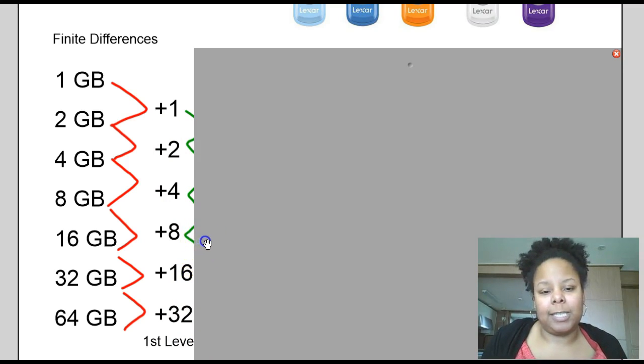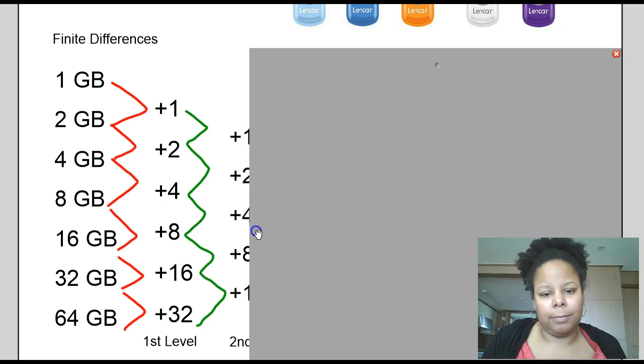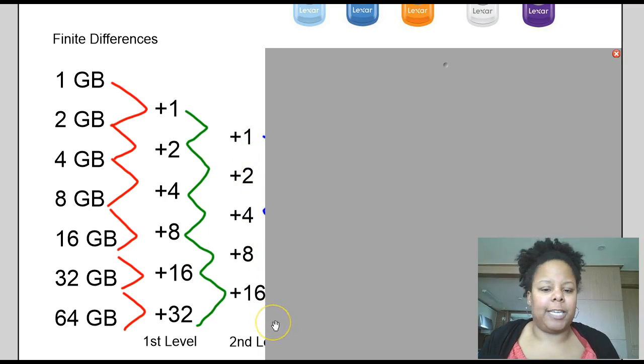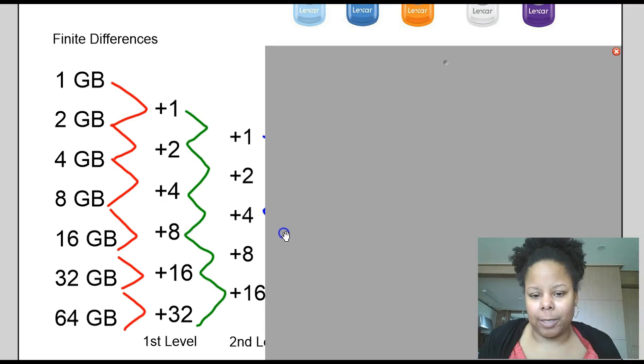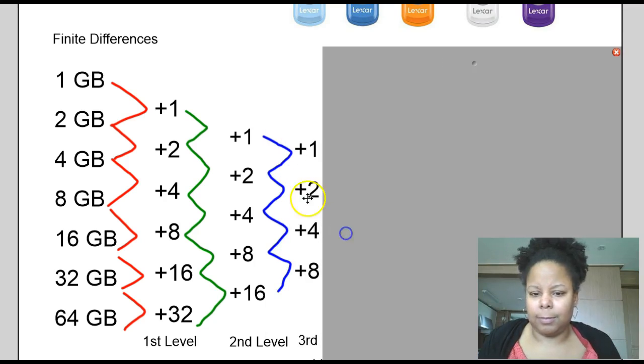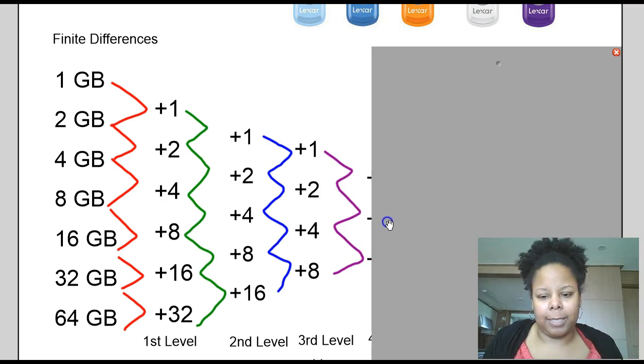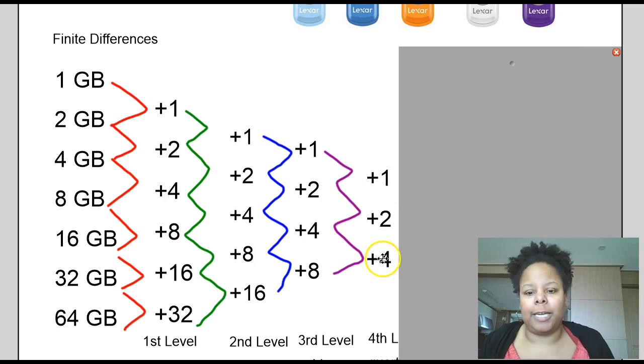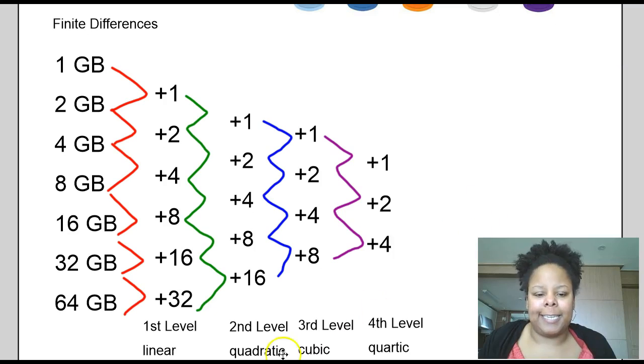So let's take a look at the rate of change at the second level. That rate of change is not constant. So that must mean it's not a quadratic equation. Let's take a look at the third level. The third level, the rate of change is not constant. So that implies that it's not a cubic relationship. Let's try one more level. It's not a constant rate of change at the fourth level. So all that means is that what we have here is something that is neither linear, quadratic, cubic, or quartic.